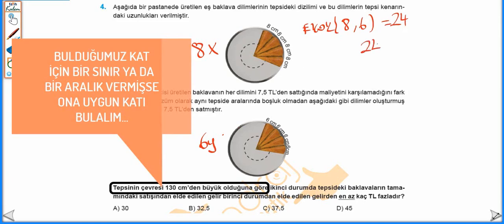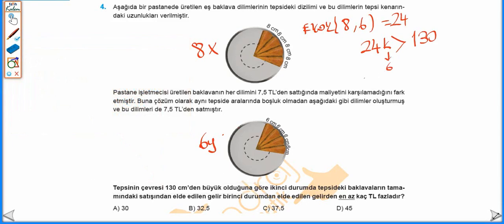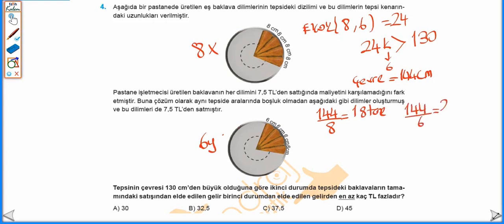Yani tepsinin çevresi 24'ün bir katı olmak zorunda. 24'ün öyle bir katını bulacağım ki 130'dan büyük olacak. k'nin yerine 6 yazdığımızda tepsinin çevresi 144 cm olarak bulunur. 144 cm'lik çevreye 8 cm'lik dilimleri koyarsak 144'ü 8'e böldüğümüzde 18 tane dilim olur. 144'ü 6'ya böldüğümüzde ise 24 tane dilim olur. Aradaki fark 6 dilim. Her bir dilim 7 tam 10'da 5 TL'den satıldığı için ikinci tepside 6 dilim daha fazla, bu da 45 TL yapıyor. Yani cevap D.